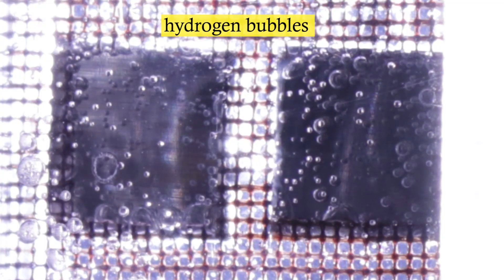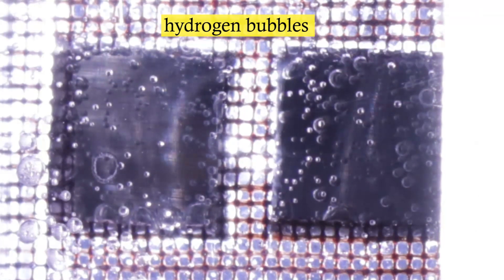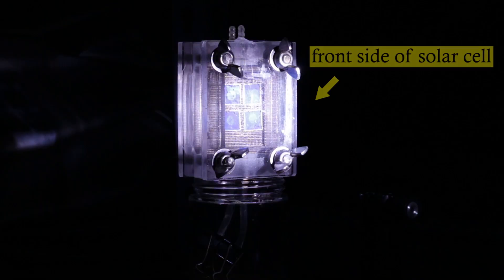In the close-up view, what you see are micro bubbles of hydrogen evolving from the surface, which is safely collected for storage and pressurization for use in a hydrogen fuel cell.